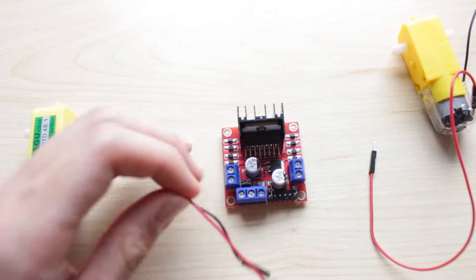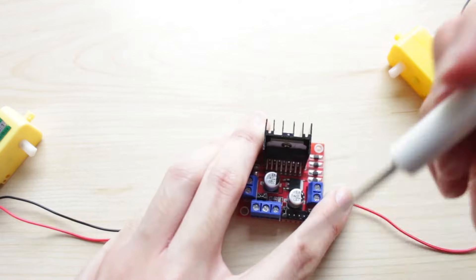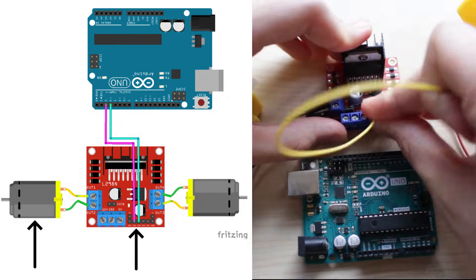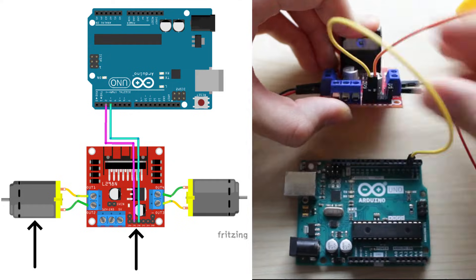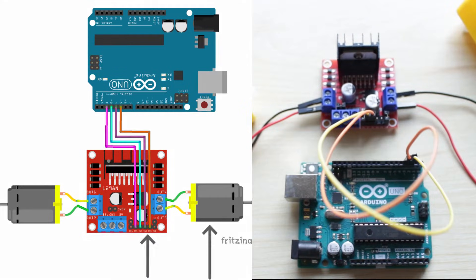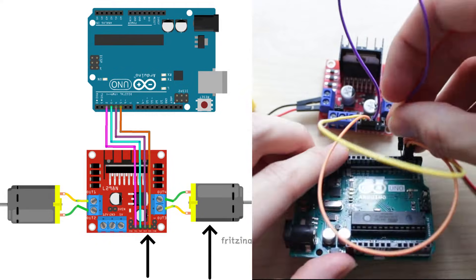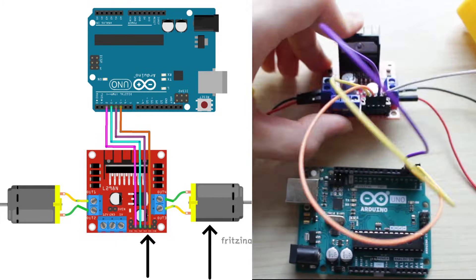It can take two motors that you plug into these two screw terminals. These two pins control the spin direction of this motor and I'll connect them to pins 2 and 3. These two pins control the spin direction of this motor and I'll connect them to pins 4 and 5.